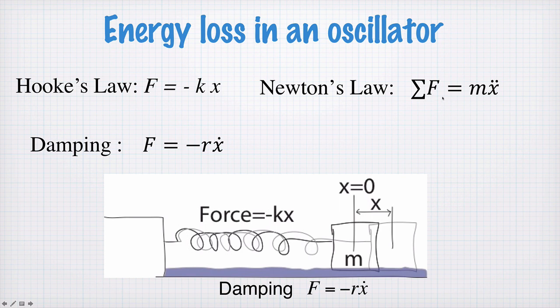Now from Newton's Law, we have that the sum of the forces must be equal to mass times acceleration. So we add up the Hooke's Law force from the spring and the damping force from our viscous damping situation. And we can write down a new equation of motion, where the acceleration, x double dot, is given by some term proportional to the velocity of the motion and the position of the motion.